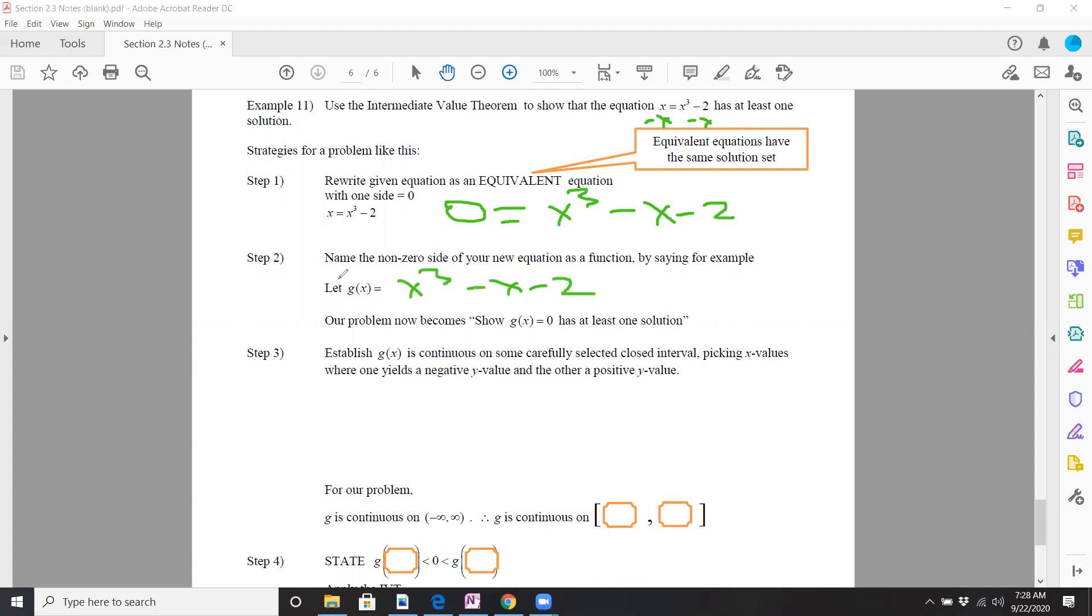And so you could think of this as a function that's polynomial in nature. We'll call it g of x. Now, if you were to graph this, Desmos or your calculator, I presume it's going to look something, the y-intercept is negative two. If I plug one in, for example, if we make a little table here, I get negative two.